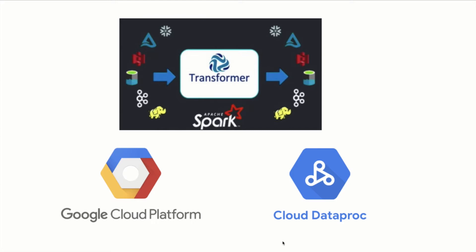Google Cloud Dataproc is a managed service for running Apache Hadoop and Spark jobs. It can be used for big data processing and machine learning. Now we are going to create a Transformer pipeline that will run over Google Cloud Dataproc.